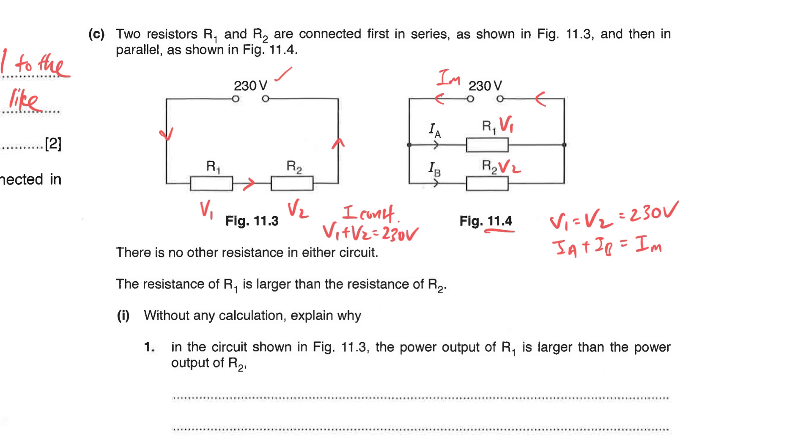With this basic concept that you have, let's continue. There are no other resistance in either circuit. The resistance of R1 is larger than the resistance of R2. So that's important: resistance R1 is greater than R2. That means you will know that the current IA definitely will be lower than the current in IB.